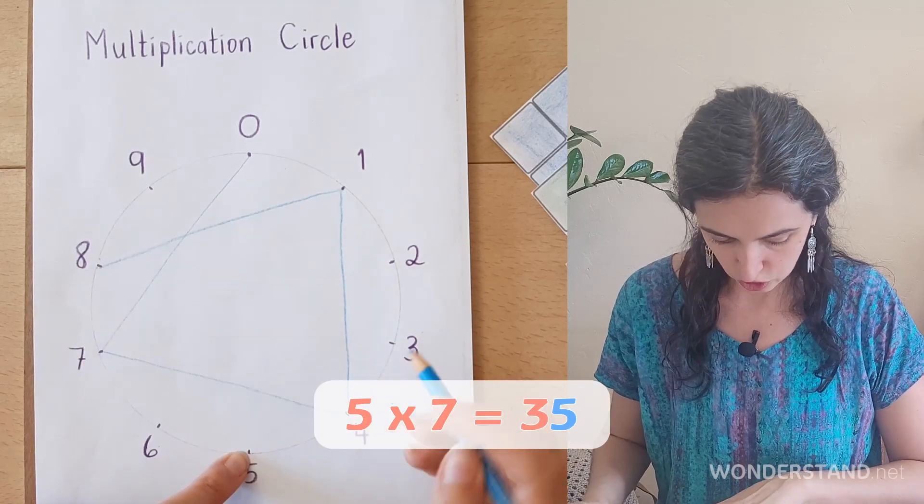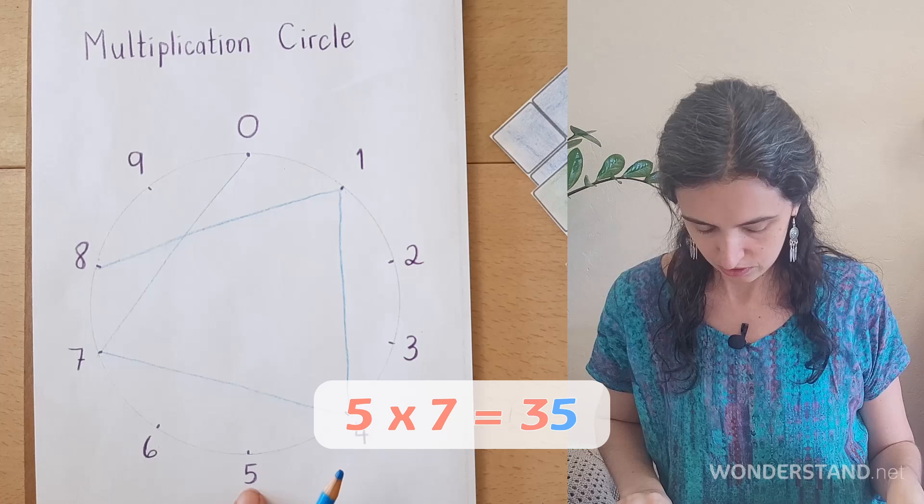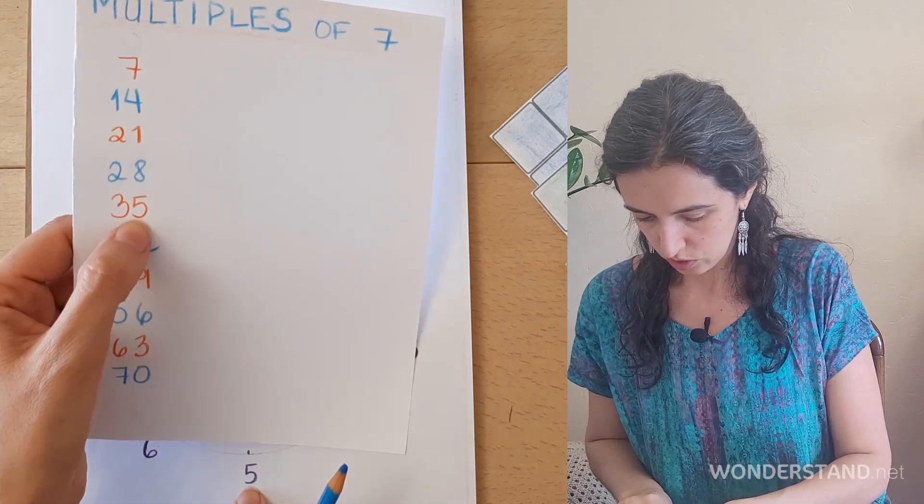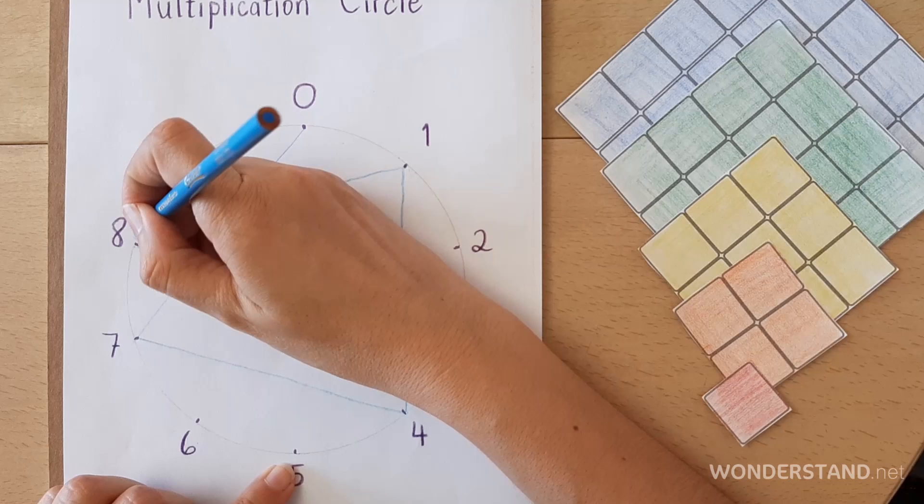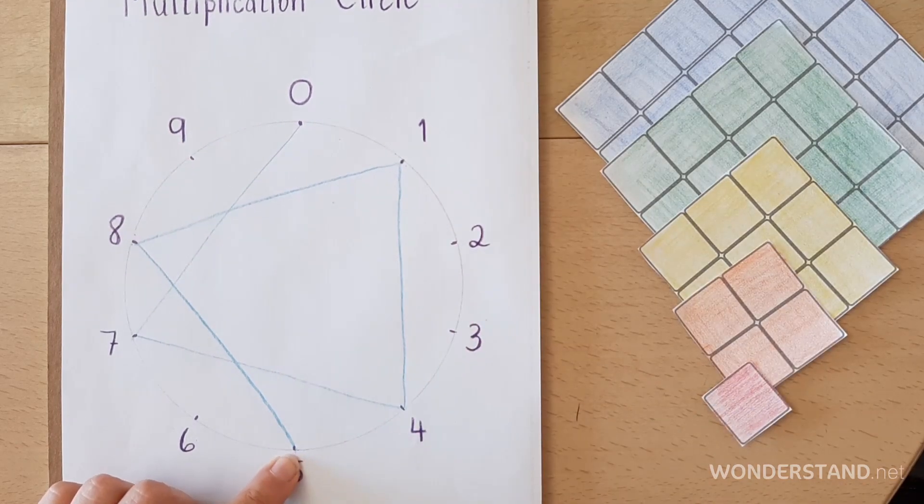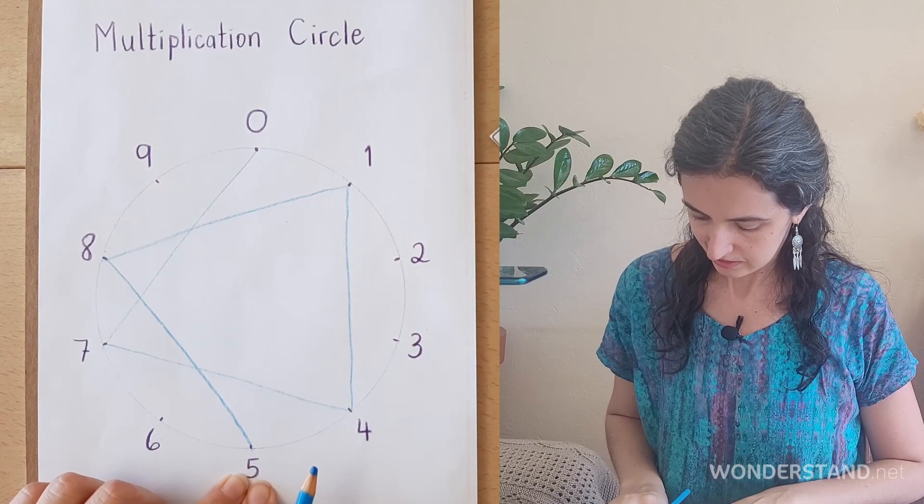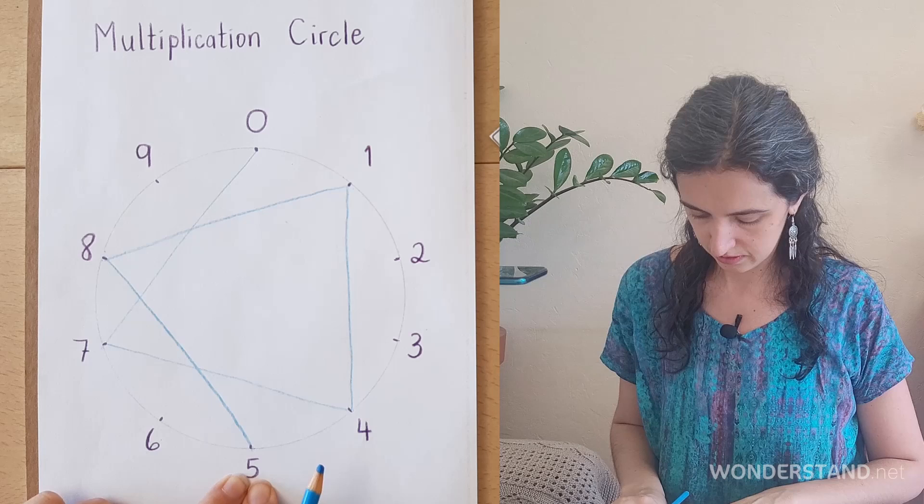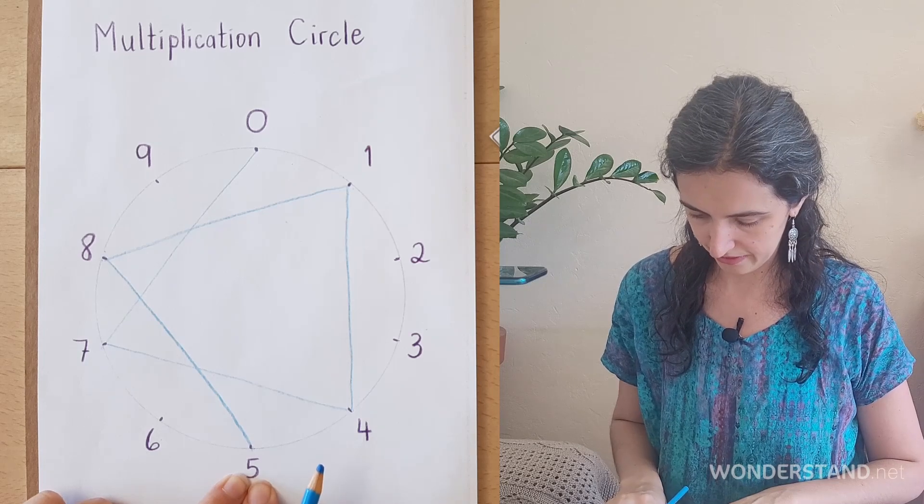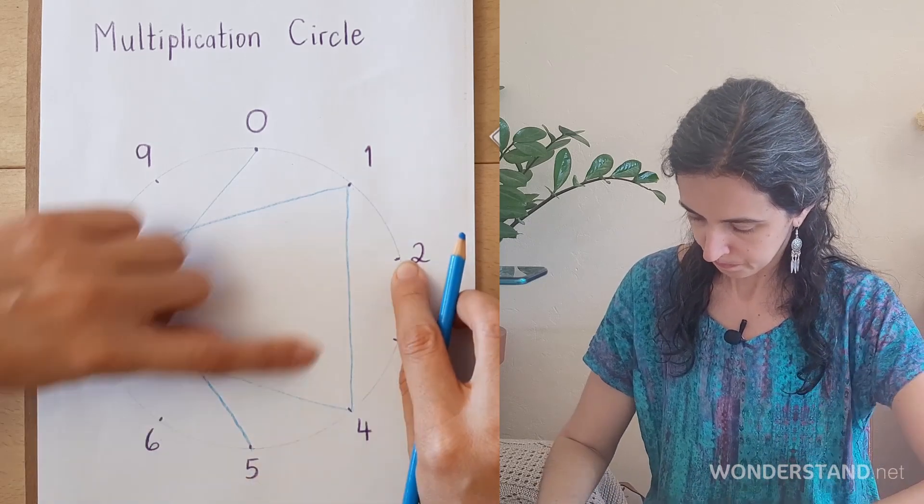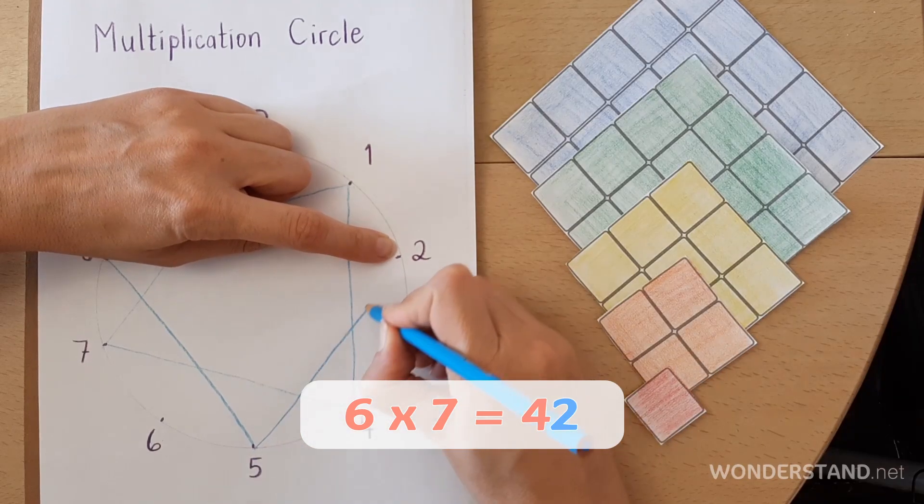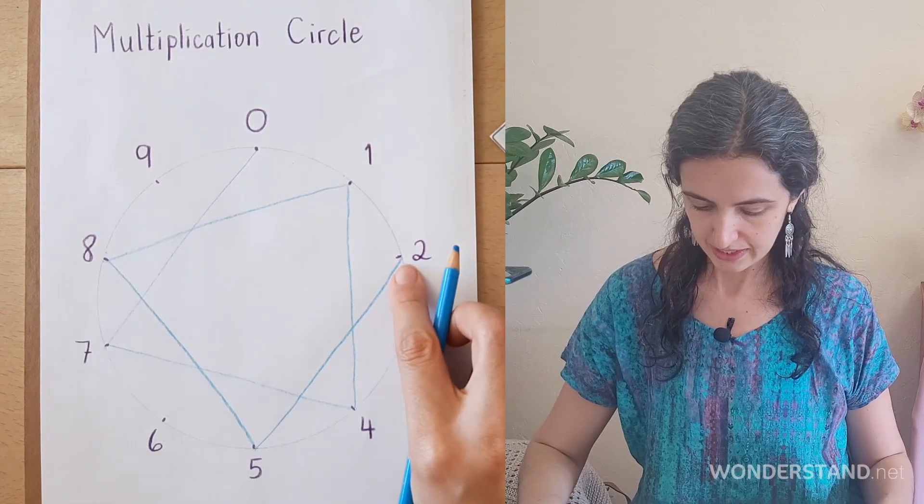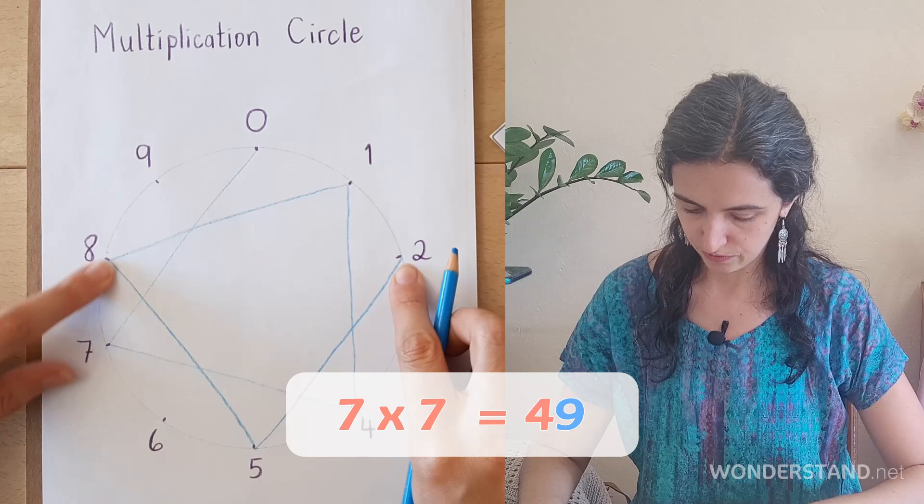5 times 7 is 35. So we're not looking at the tens. We're looking at the ones. 35. 6 times 7. So 35 plus 7 is 42. And 7 times 7 is 49.